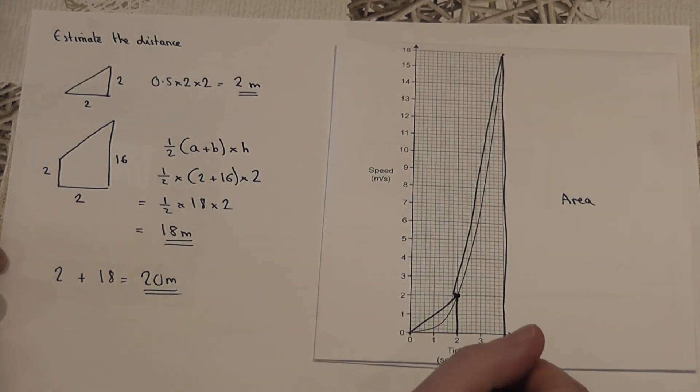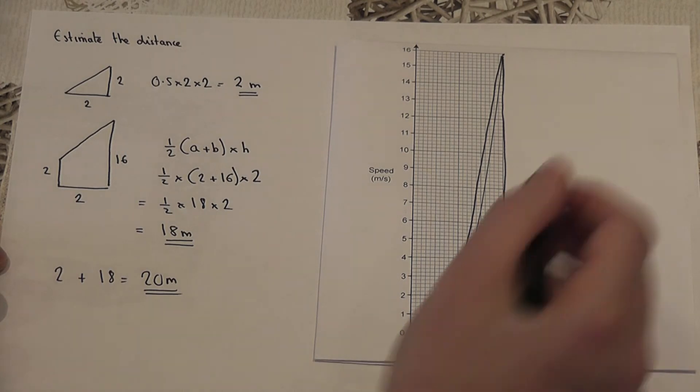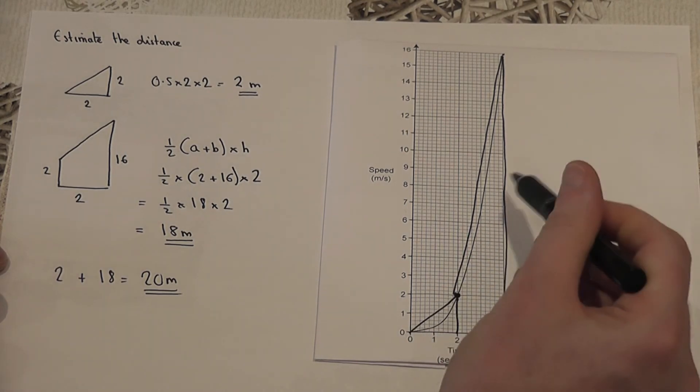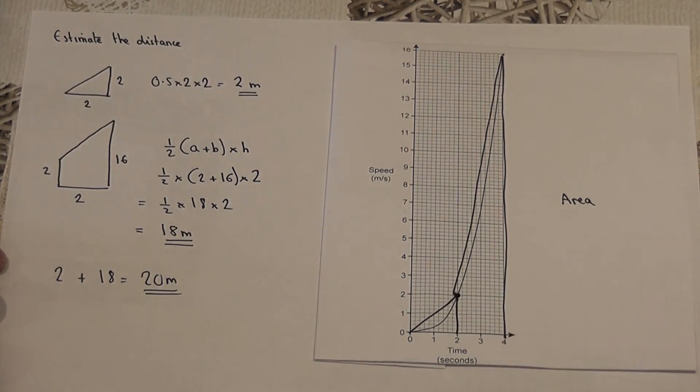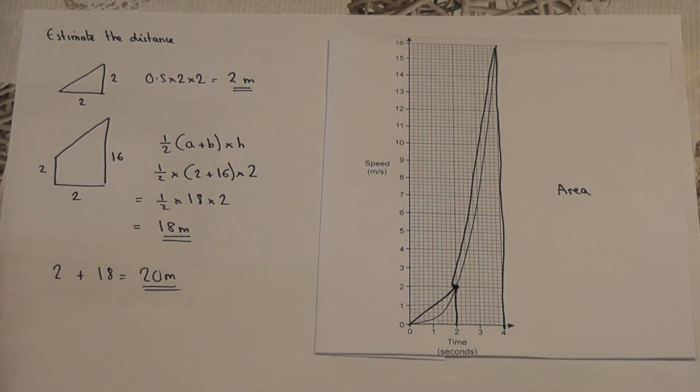So again, given a speed-time graph, to find the distance, you have to calculate the area. When it's a curve, it's an estimate, and in this case, because the shapes are too big, it would be an overestimate for the distance travelled.